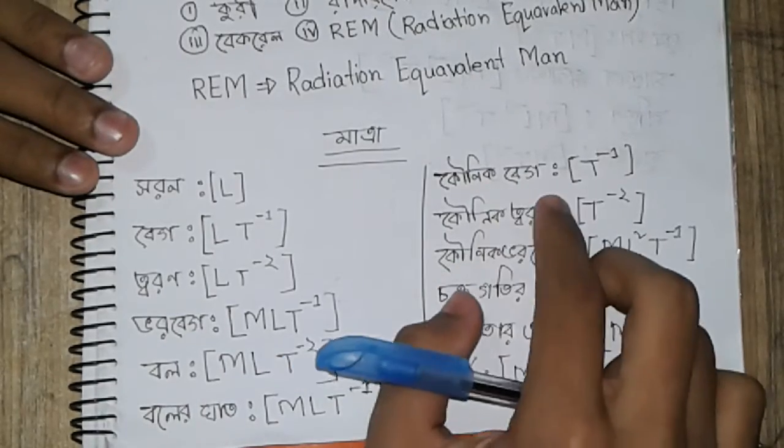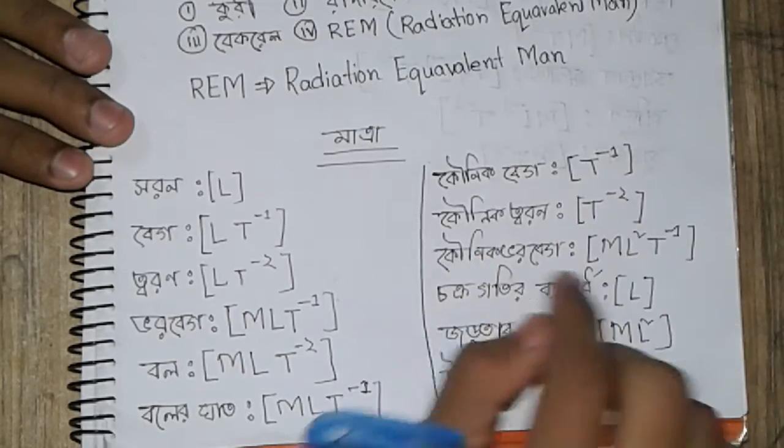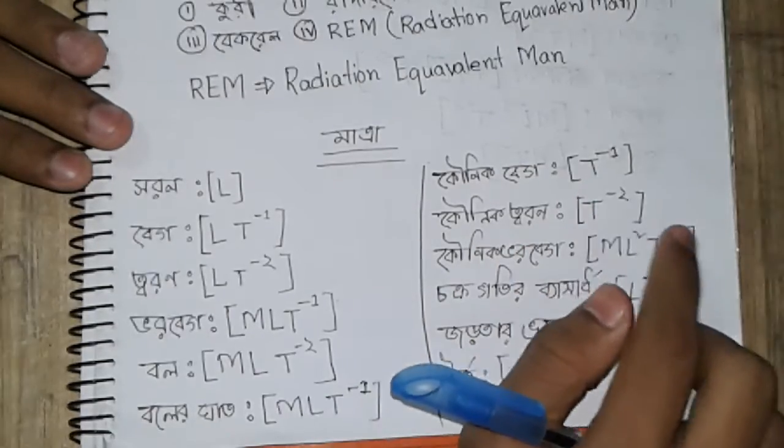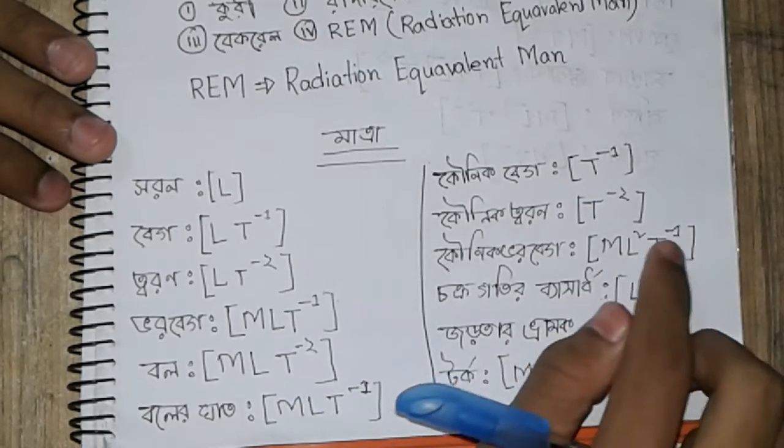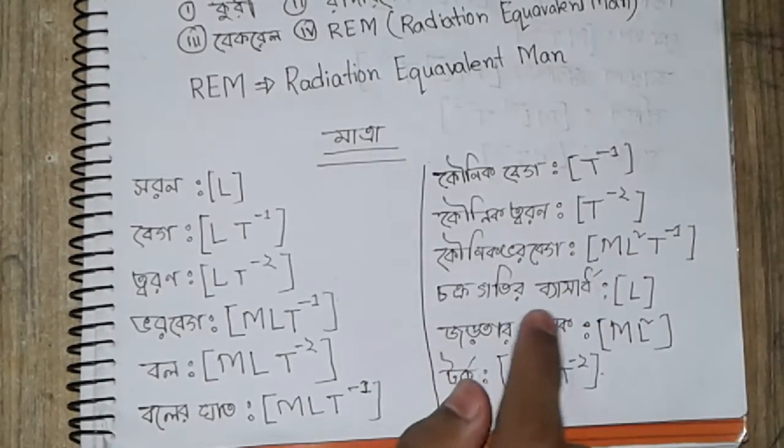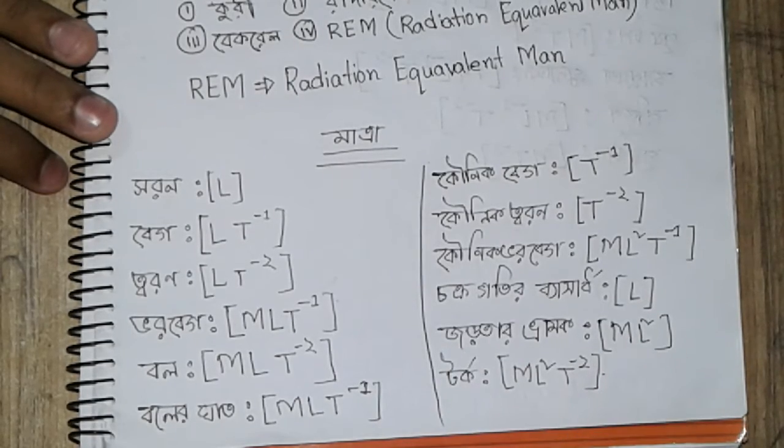We have T inverse one, T inverse two, and ML square T inverse one. The dimensional formula is ML square T inverse two.